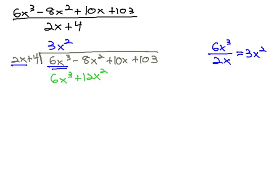Once we've done this step, the important next step that often is where errors occur is we need to change the sign on each of the terms to show we're subtracting. Change the 6x cubed to negative 6x cubed, and the 12x squared to negative 12x squared. When we do this, the 6x cubed and negative 6x cubed will subtract out to 0.